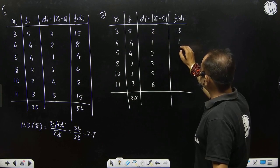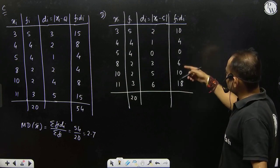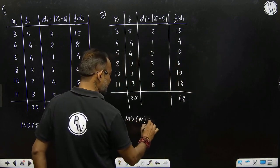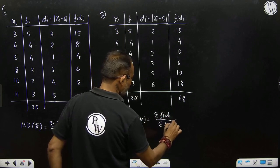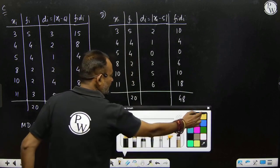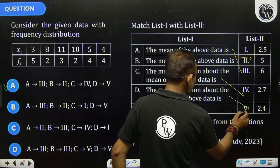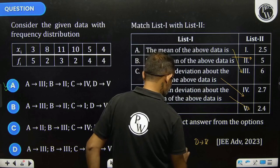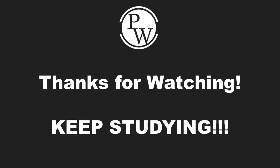We compute fi times di, multiply these values. Adding them: 20, 30, 48. Then mean deviation about median equals 48 by 20, which is 2.4. Option D is connected to 5. So option A is confirmed correct.